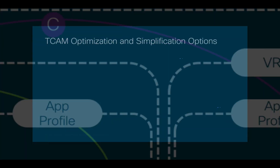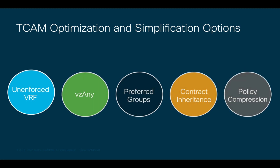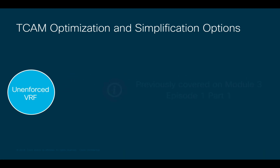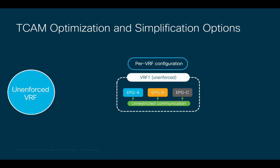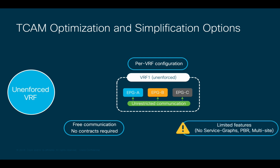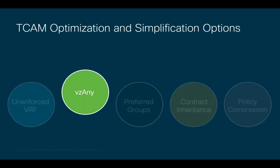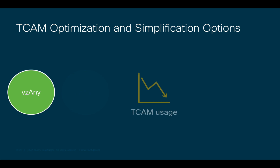Let's cover a few additional configuration options that may impact TCAM usage. First, unenforced VRF: this option is enabled at the VRF level, and it means that all communications will be allowed within the VRF without any contract configuration needed. This obviously reduces TCAM consumption; however, some features like service graphs, PBR, and even quality of service cannot be configured when this option is used. This is why VCNE may be useful, allowing you to reduce TCAM consumption without losing features.